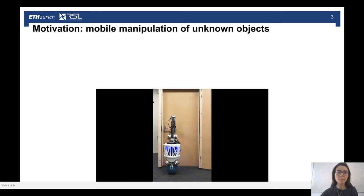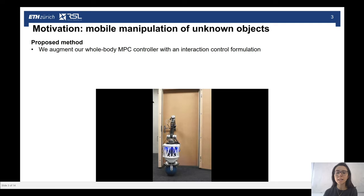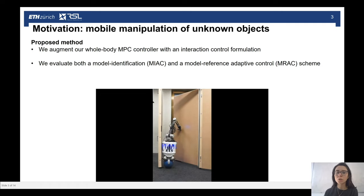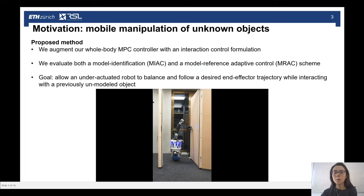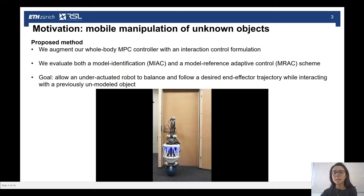So let's give an outlook of the paper. The proposed method consists in augmenting our previously presented whole-body MPC controller with an adaptive controller at the level of interaction with the external environment. Within the interaction control formulation, we have implemented both a model identification adaptive control scheme, or MIAC, and a model reference adaptive control scheme, or MRAC, that we have combined with the whole-body MPC controller. The goal is to allow an under-actuated robot, in particular a ball-bot, to balance and follow a desired end-effector trajectory while interacting with a previously unmodeled object.